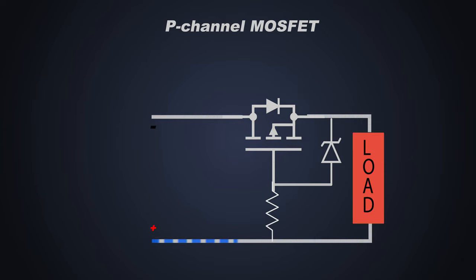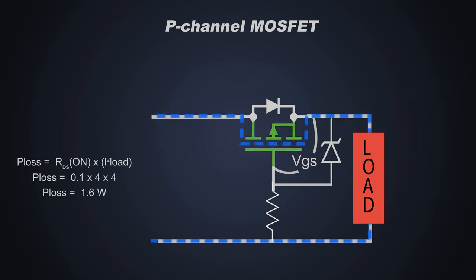When the reverse polarity is connected, the MOSFET will be switch off, because the gate to source voltage for this case will be positive. Conduction loss of this MOSFET would be so less. For example, let's say the RDS ON is 0.1 ohms and current is 4 amperes. Then the conduction loss across this MOSFET would be only 1.6 watts.